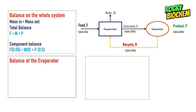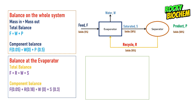If we consider the evaporator to write the balance equations, the total balance equation equals the sum of arrows pointing towards the evaporator equated to the sum pointing away. The feed F and the recycle R are the only arrows pointing towards the evaporator, whereas the water and the saturated stream are pointing away. So the total balance equation is written as F plus R equals W plus S. We can also write the component balance equation by multiplying the respective percentages of the solid component under consideration by the masses of the feed, the recycle stream, the water, and the saturated stream.